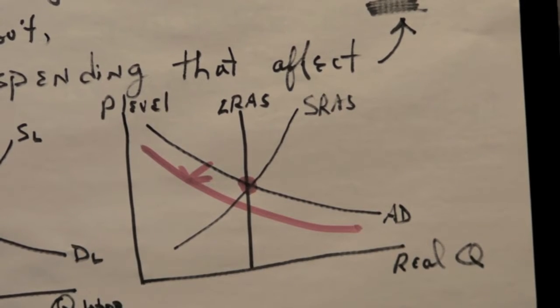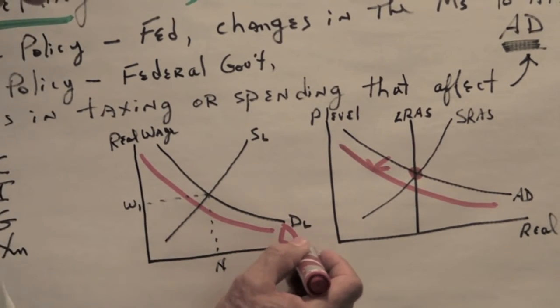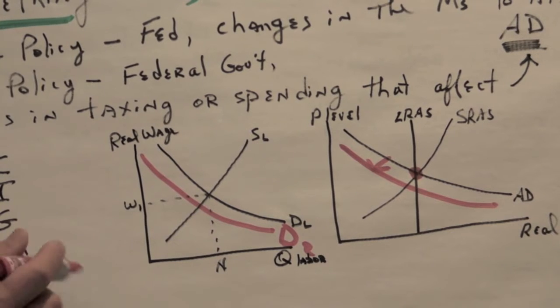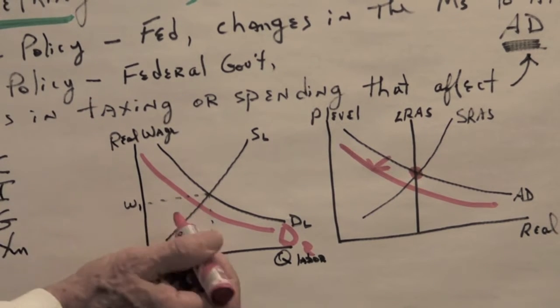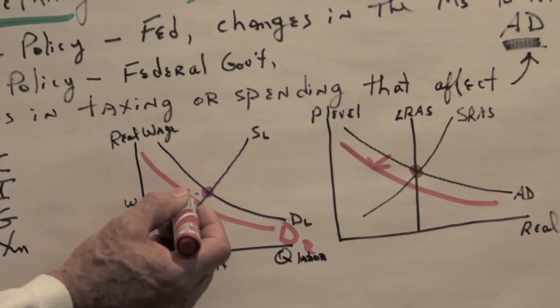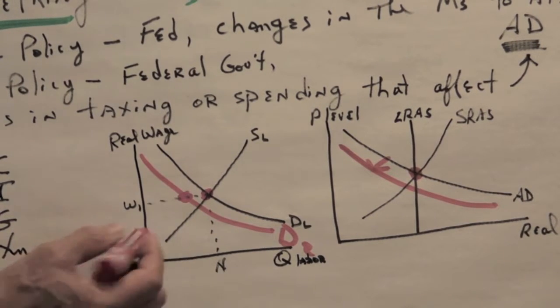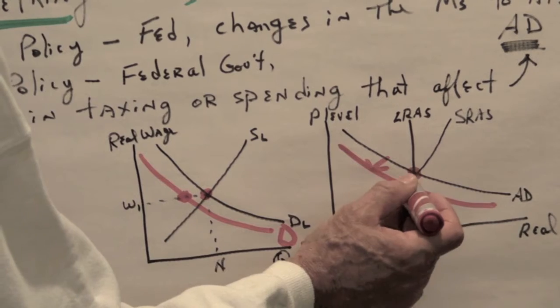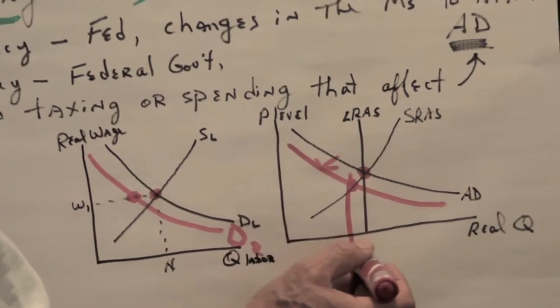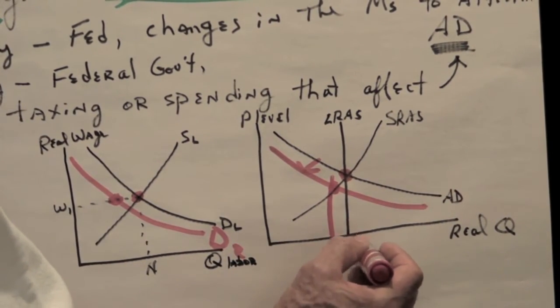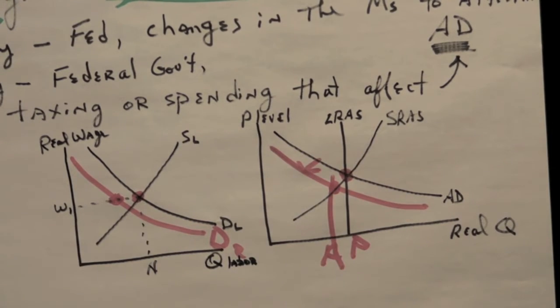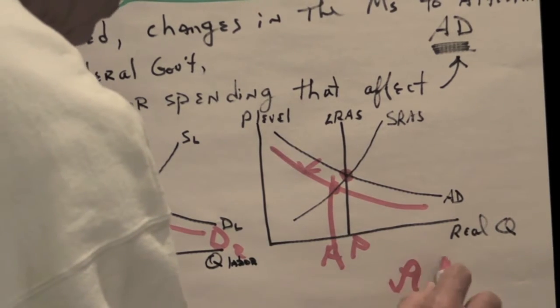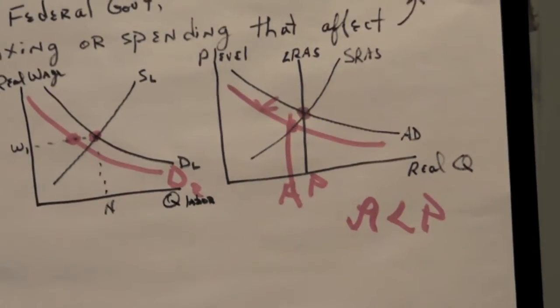This decreases the demand for the resources used in the production process. The biggest resource, of course, is labor. So we show the labor market. At the old wage level, W1, we have a surplus, and we have here a recessionary gap. Because here is the actual level of output, and the long-run aggregate supply curve shows the potential. So when actual is less than potential, we have a recessionary gap.